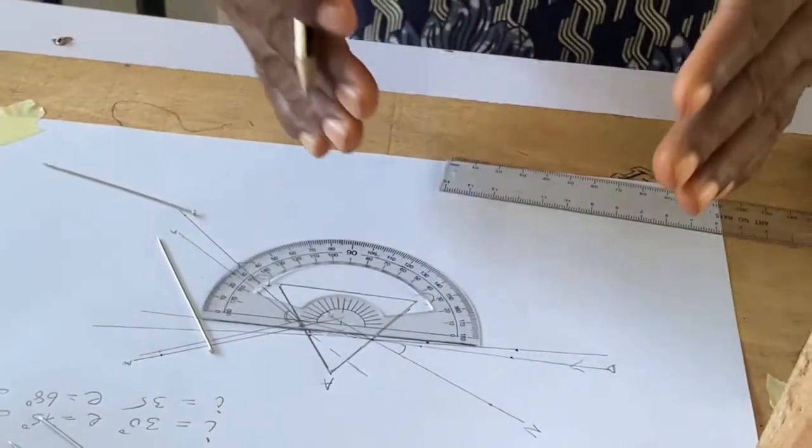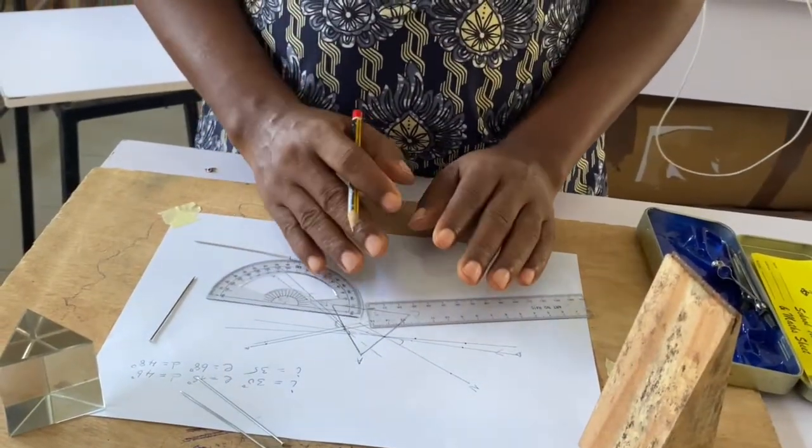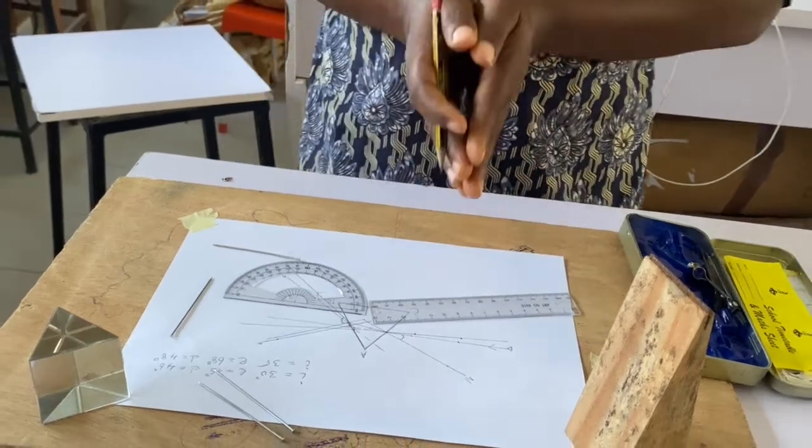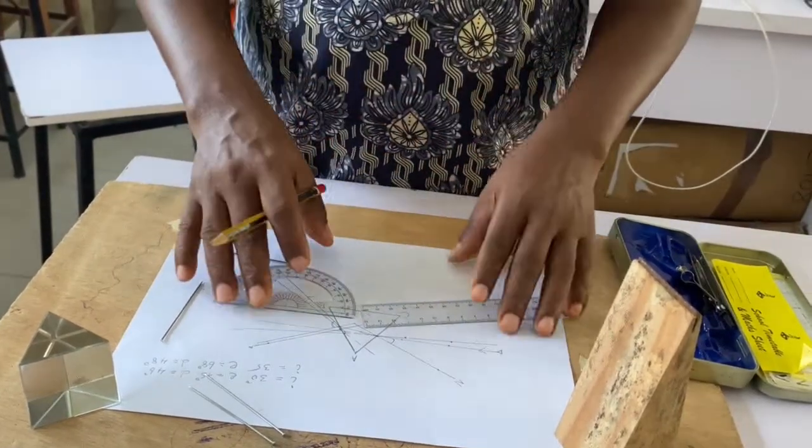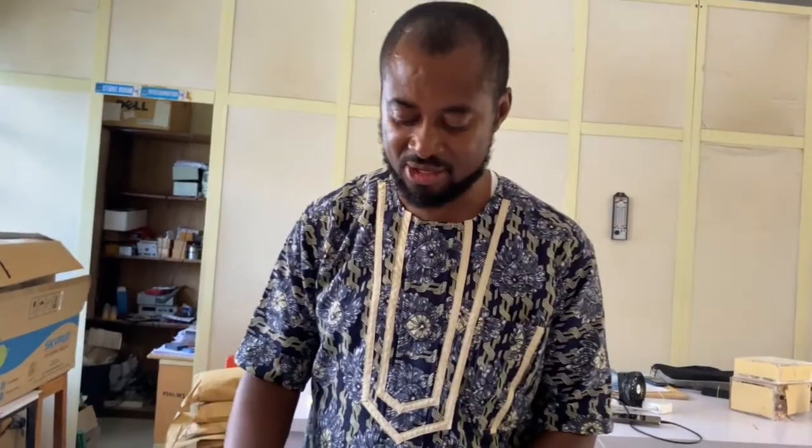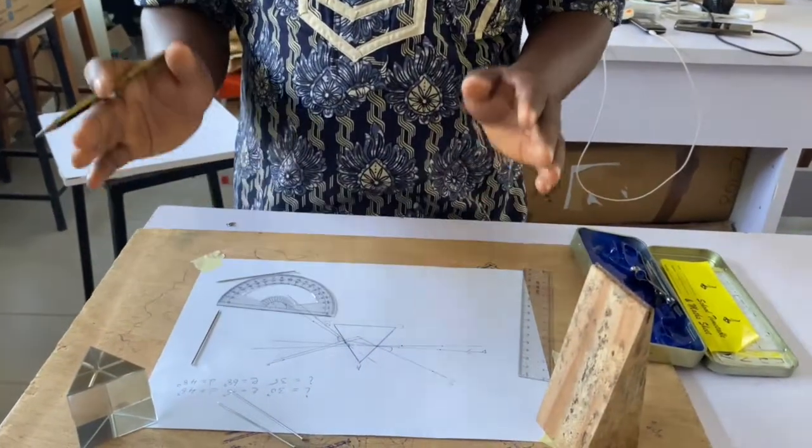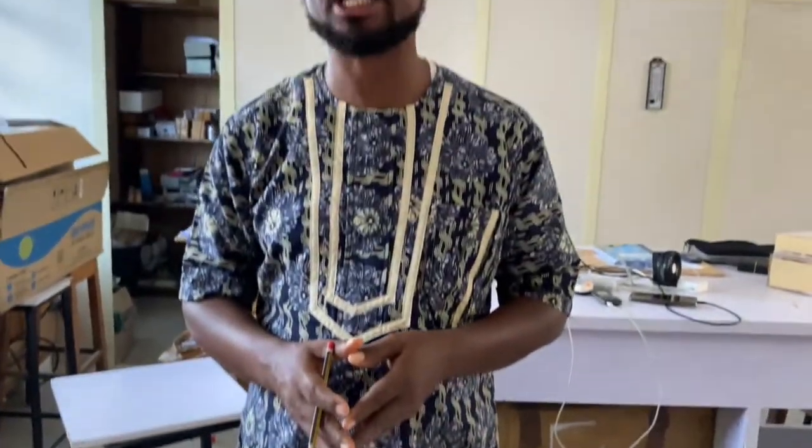In the same process, I repeat for angle 40, 45, 50, 55, 60, 65. It is advisable you use different triangles so that your work will be neat, because by the time you are using the same triangle, you might be confused. I advise you to use different triangles for each of the work. Thank you and God bless you. If you enjoy the video, please like and subscribe to our channel. Thanks.